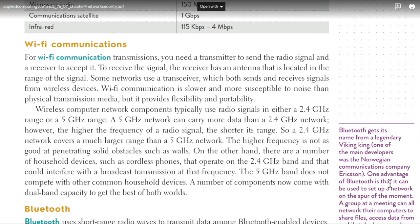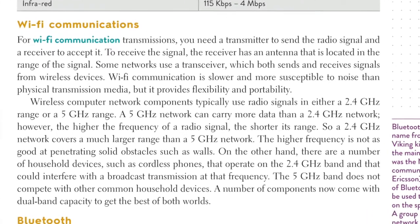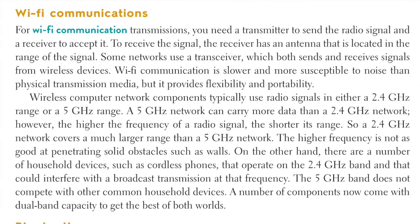For Wi-Fi communications, you need a transmitter to send the radio signal and a receiver to accept it. To receive the signal, the receiver has an antenna that is located in the range of the signal. Some networks use a transceiver which both sends and receives signals from wireless devices.